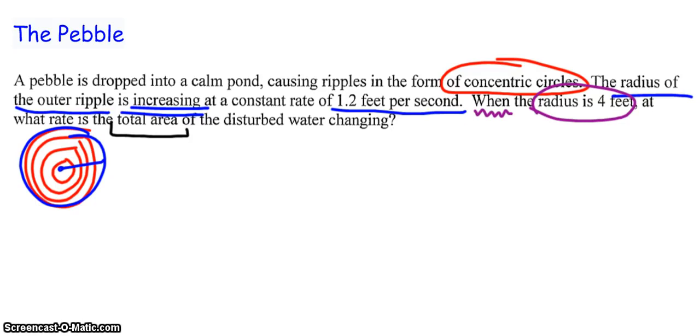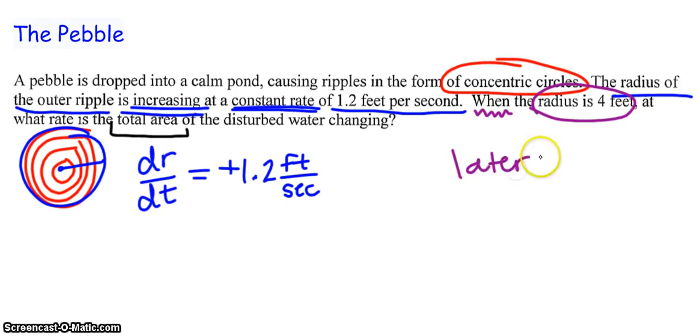When the radius is 4 feet, so that doesn't happen all the time, but there is a moment in time when the radius will be 4 feet, at what rate is the total area of the disturbed water changing? Disturbed water? Oh, they mean the part with the ripples. That's a lot of words. That is a lot of words. Let's maybe translate those. Okay. Let's try. Okay, so if we go through there, one thing I remember seeing is the word rate, and it said a constant rate of 1.2 feet per second, and also the word increasing was there, and you just told me increasing things have a positive rate of change, so I think 1.2 is a thing, but I don't know what it is.